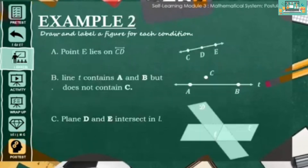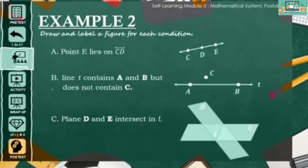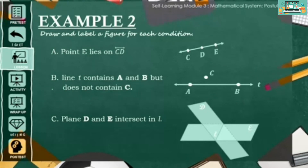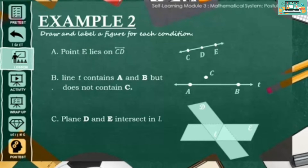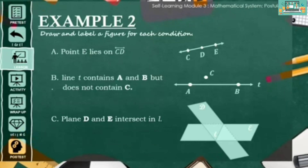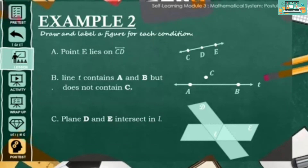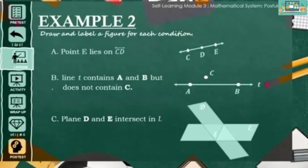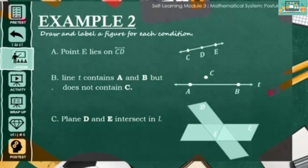Now for your next challenge, draw and label a figure for each given condition. Number 1: draw point E that lies on line CD. Is your figure similar to this one? Then you're correct. But if you placed point E between point C and D, or before point C and D, that is also correct. You can write or place E anywhere on line CD.